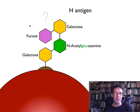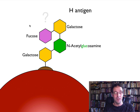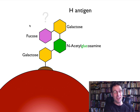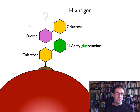There's a gene on chromosome 19 that encodes an enzyme that puts it there. Because practically everybody has that gene on chromosome 19, everybody has that enzyme, and so that antigen is put on the surface of their red blood cells.